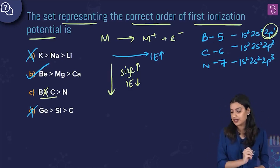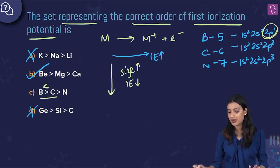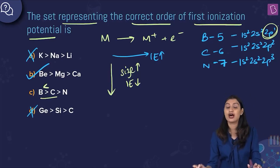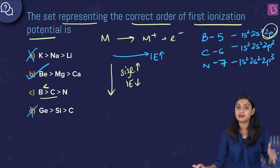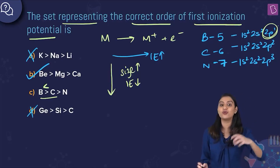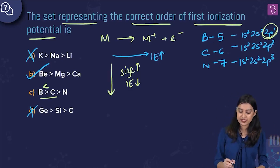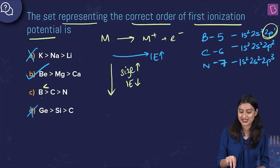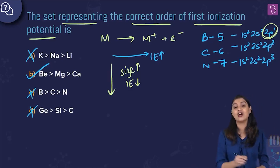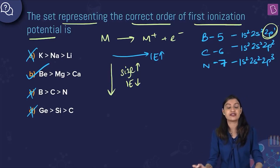So the correct order is N > C > B, not B > C > N as stated — meaning option C is also incorrect. Option B, beryllium greater than magnesium greater than calcium, is the correct order of first ionization potential and is the right answer.